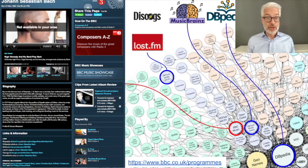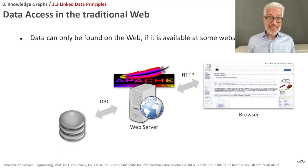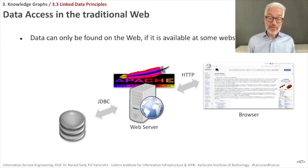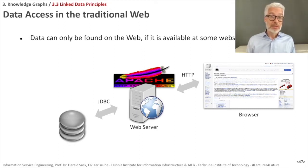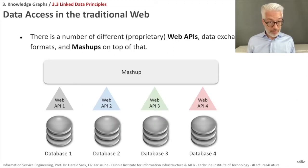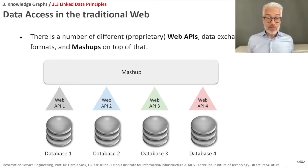Before going deeper into examples, let's look at the traditional web. In the traditional web, if you want to access data, it might be available at some website, which means you always have to go through a web server. Behind the web server there is a database, and the database communicates with the web server using a different kind of interface — differing from the web interface that the browser and web server use. That is HTTP on one side and something like JDBC on the other side between the web server and the remote database. Each database connected to a web server offers an external API, a programming interface.